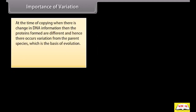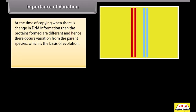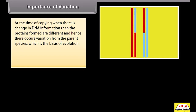At the time of copying, when there is a change in DNA information, the proteins formed are different, and hence there occurs variation from the parent species, which is the basis of evolution.